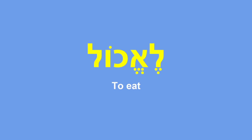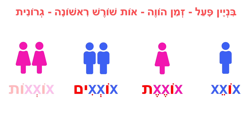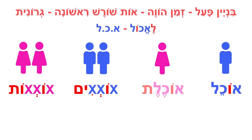Le'echol — to eat. Once again, four conjugations and the same conjugation pattern in the present tense. The verb Le'echol contains the root letters Alef, Chaf, Lamed. We place them inside the conjugation pattern and we receive: Ochel, Ochelet, Ochlim, Ochlot — a verb we are perfectly familiar with from the first module.